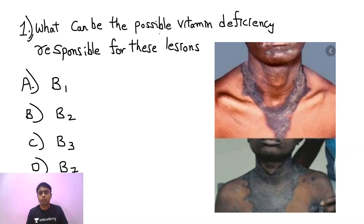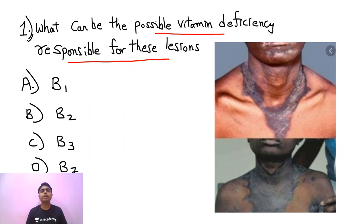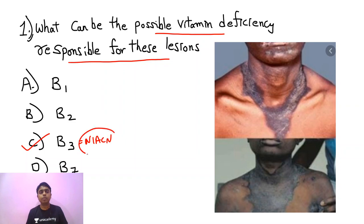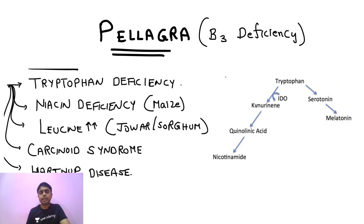Please identify what is the possible vitamin deficiency responsible for these lesions. This is a very classical picture — it was given in AIIMS exam and repeated in DNB innumerable times. If you have answered B3, that is niacin deficiency, then very good. B3 deficiency is called pellagra.